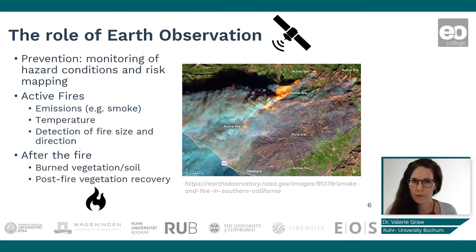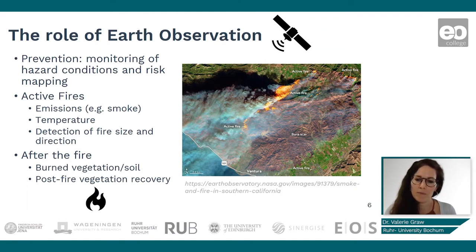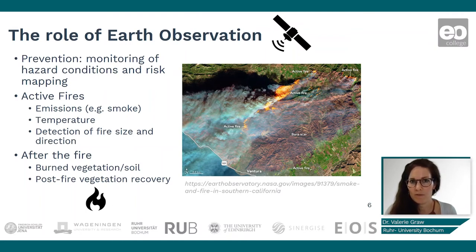What is the role of earth observation here? Earth observation can support many parts of disaster risk management. For prevention, we can monitor hazard conditions and do risk mapping — thinking about the fire triangle, we can monitor if there is a continuous condition of high temperature or heat stress in a region, and identify forests of high hazard where a fire would be more likely to occur. We can also map these as risk areas, for example those close to settlements where people or habitats might be affected.